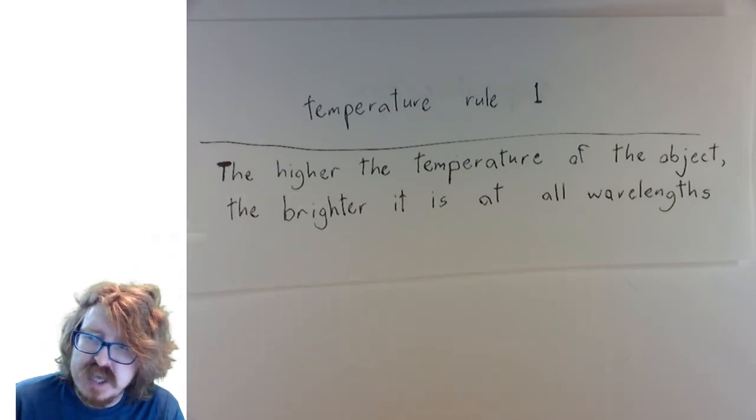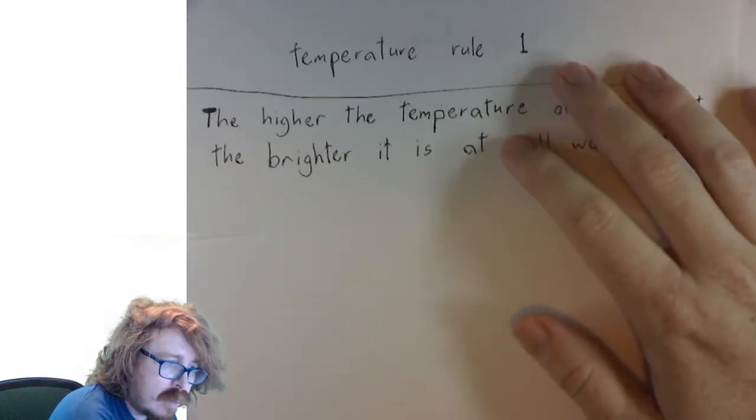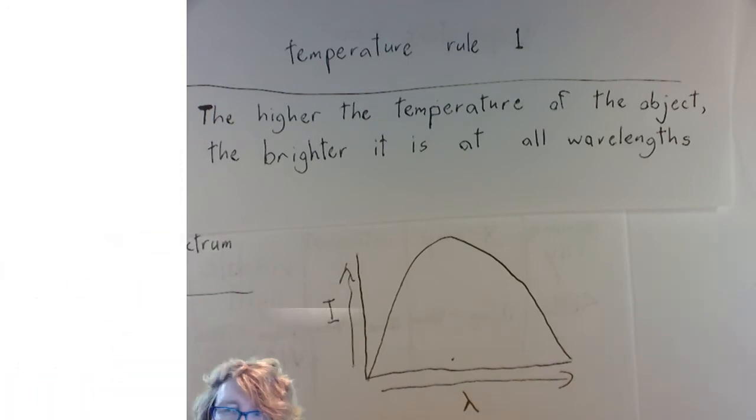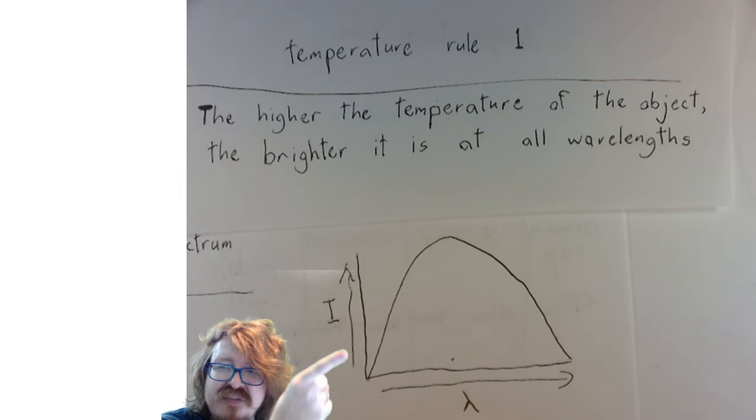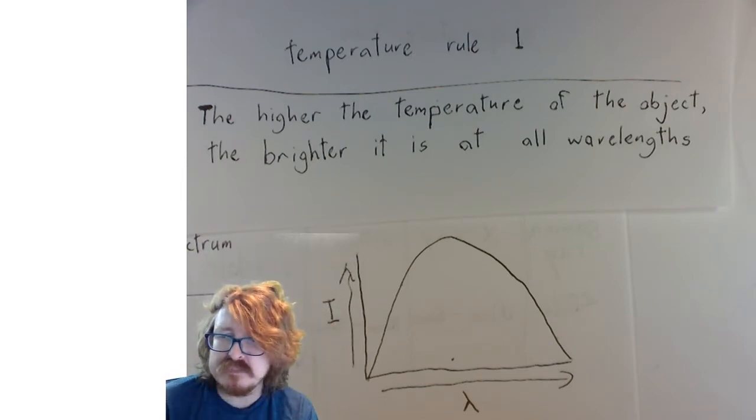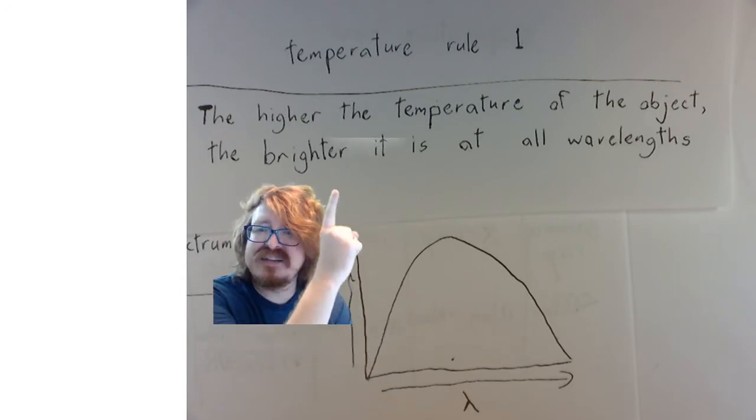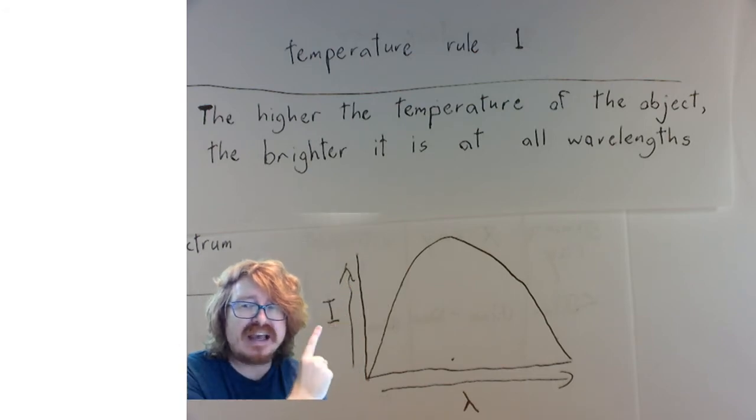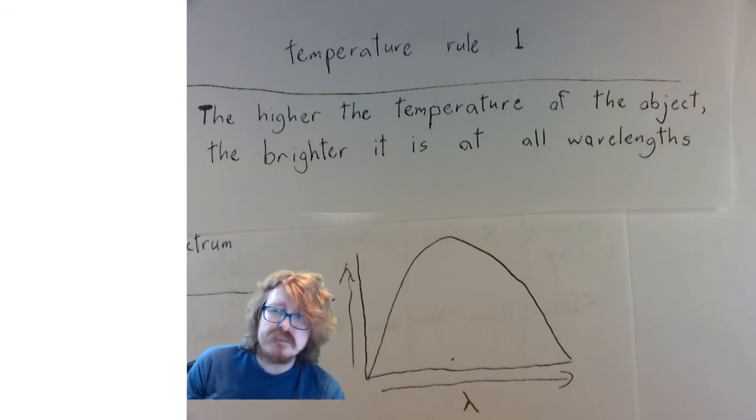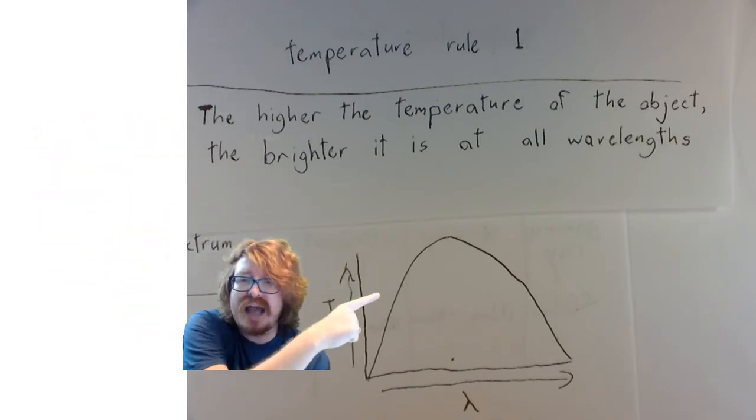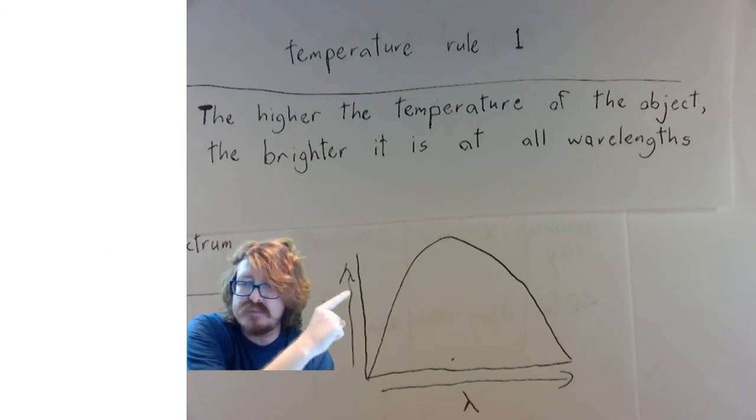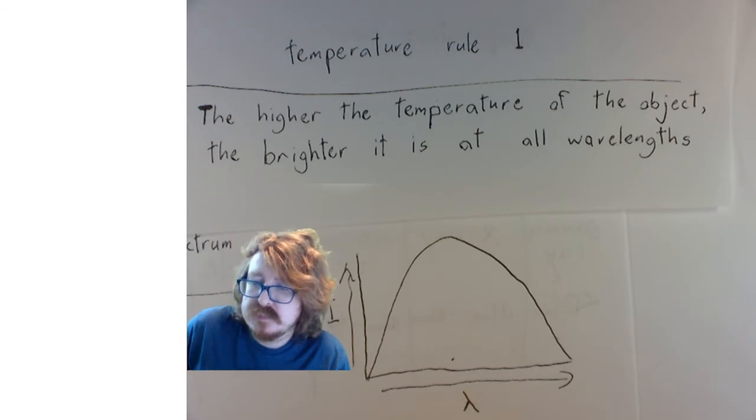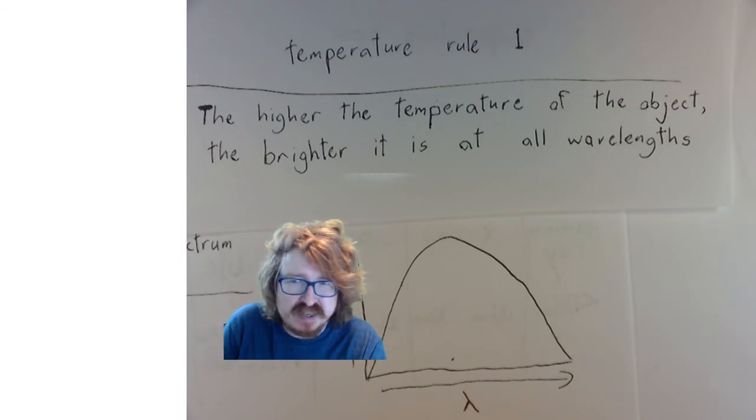Now, if I bring back in this picture of a spectrum, remember on this graph we've got the wavelengths along the bottom and we've got the intensity over here, so brighter is higher. So if this was the spectrum of an object, according to this rule, if we made that object hotter, what would happen to every part of this graph? If making objects hotter makes them brighter at every wavelength, what would happen to every part of this graph if we made this object hotter? That is correct. Every part of it would go up.